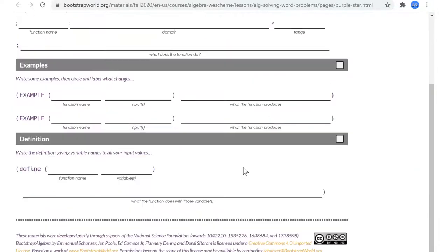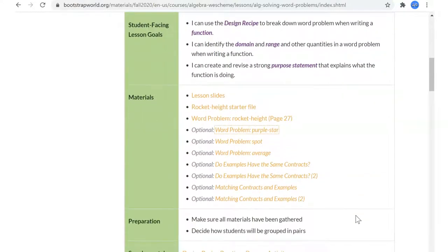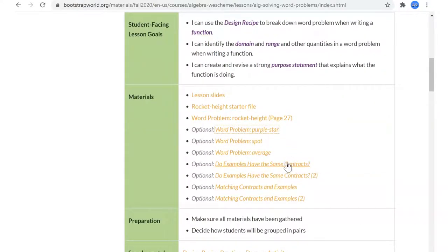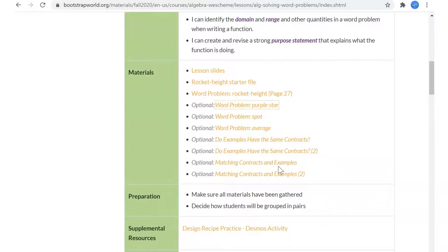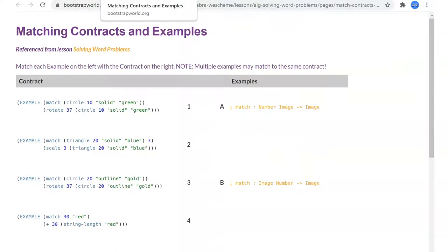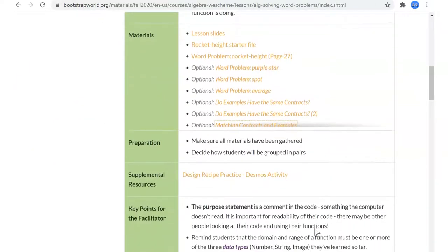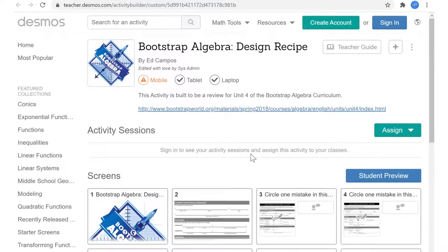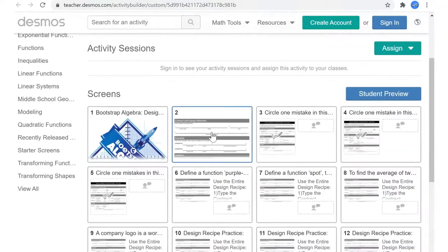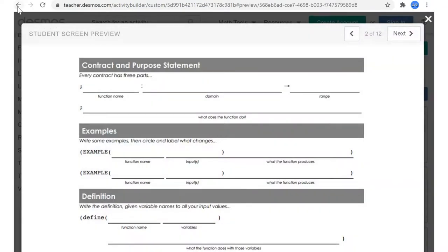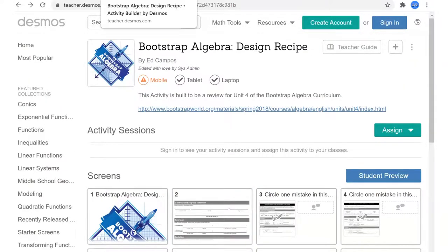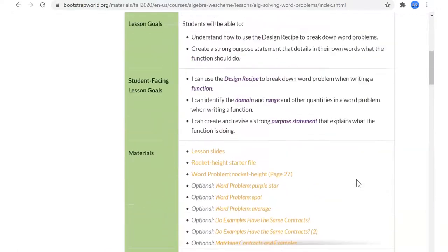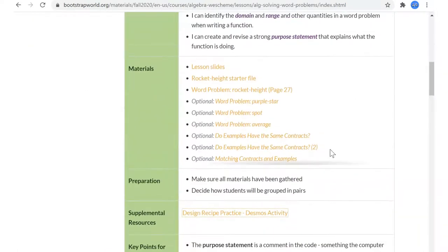Let's see what the homework is like. Star. Spot. Do examples have the same contracts? Matching. Most of the time, if somebody's teaching this and they have Desmos, that's cool. I don't, but I like to look and see what they do. It's a great site if you use that as part of your teaching. Super good. Let's look through.